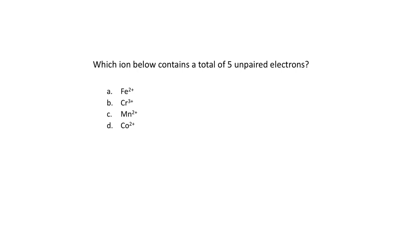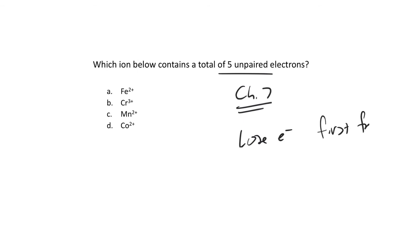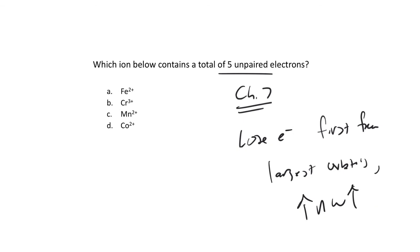Which ion contains five unpaired electrons? This comes back to electron configurations of cations from chapter 7. In cations, we lose electrons first from the largest orbitals — the highest n orbitals with the highest l value. So for iron 0, the configuration is [Ar] 4s2 3d6. The largest orbital is the 4s, so the two electrons we kick off first are the 4s2. Iron 2+ therefore has configuration 3d6, giving four unpaired electrons — not the answer.